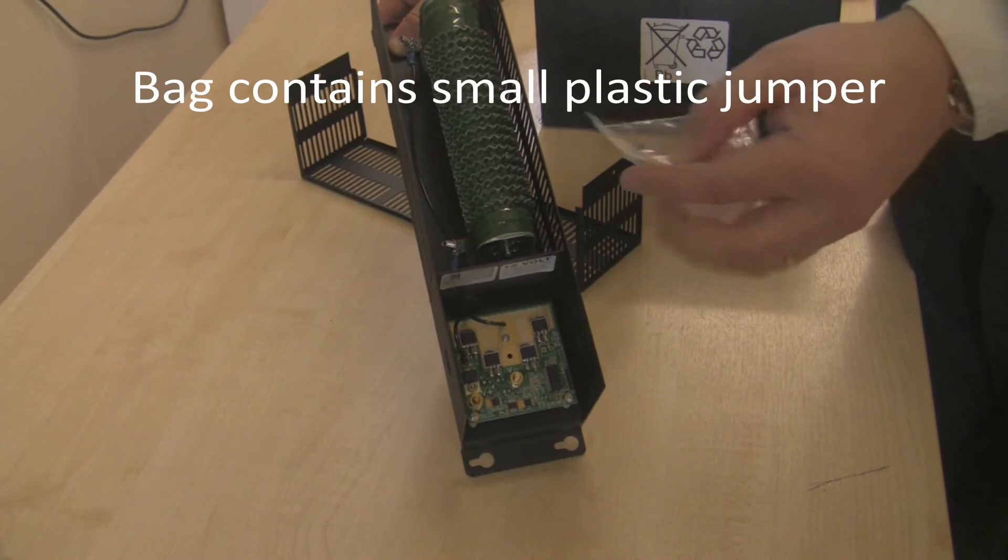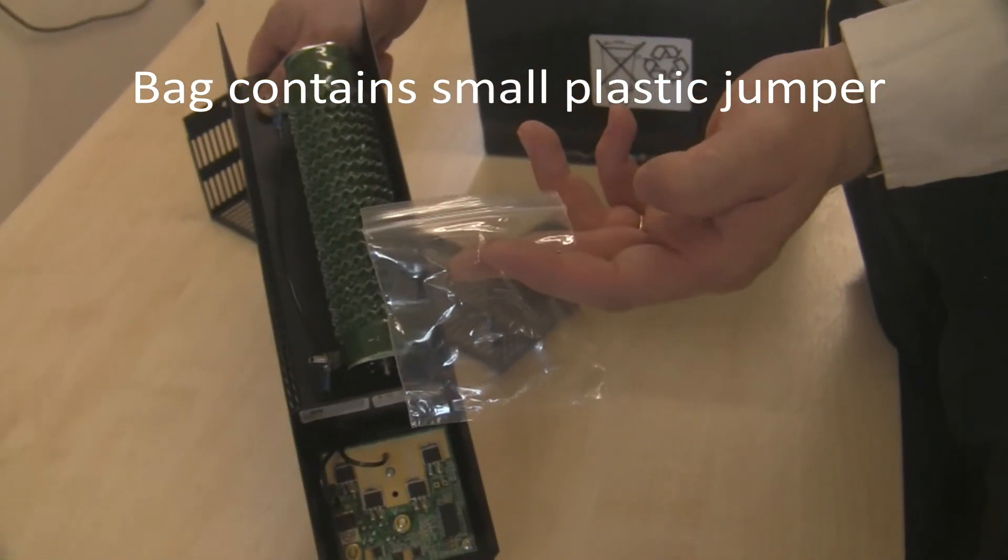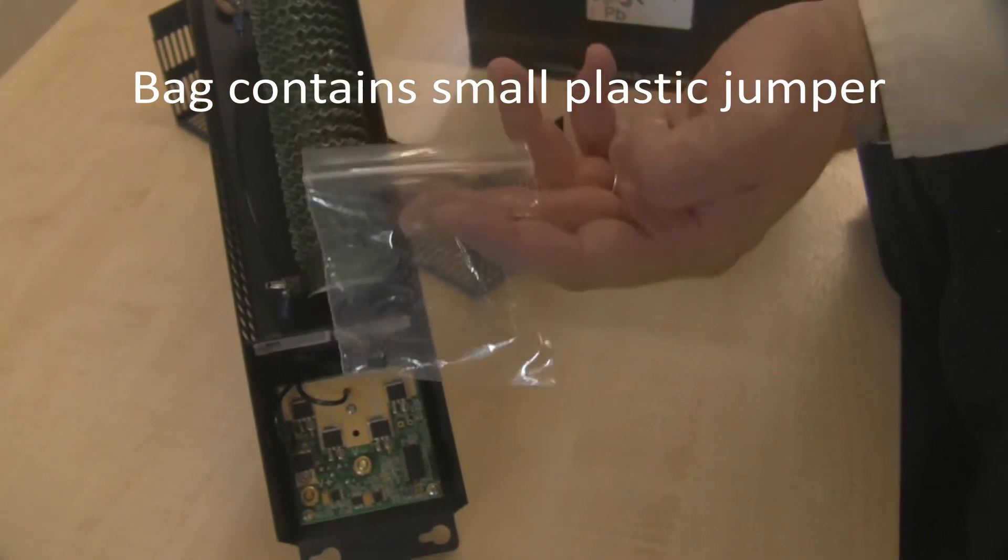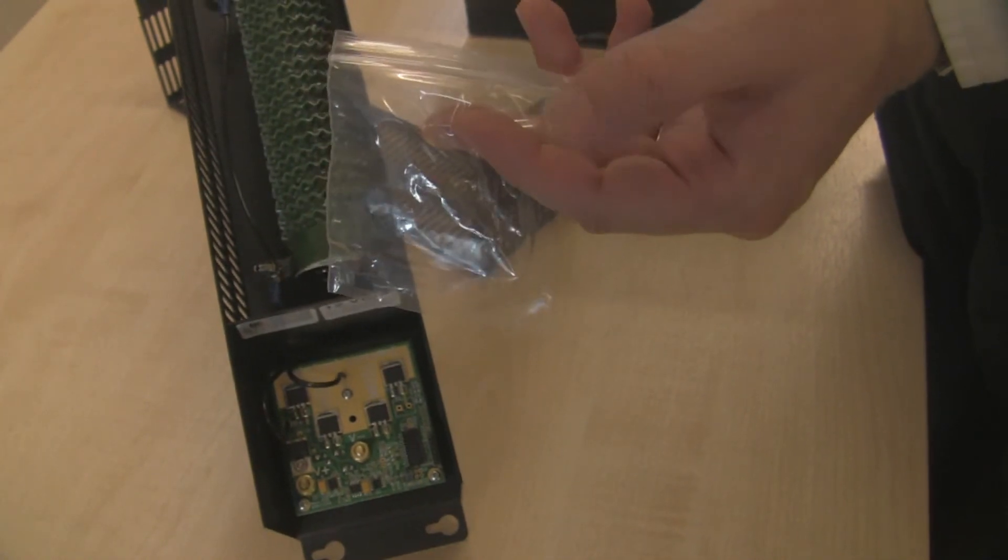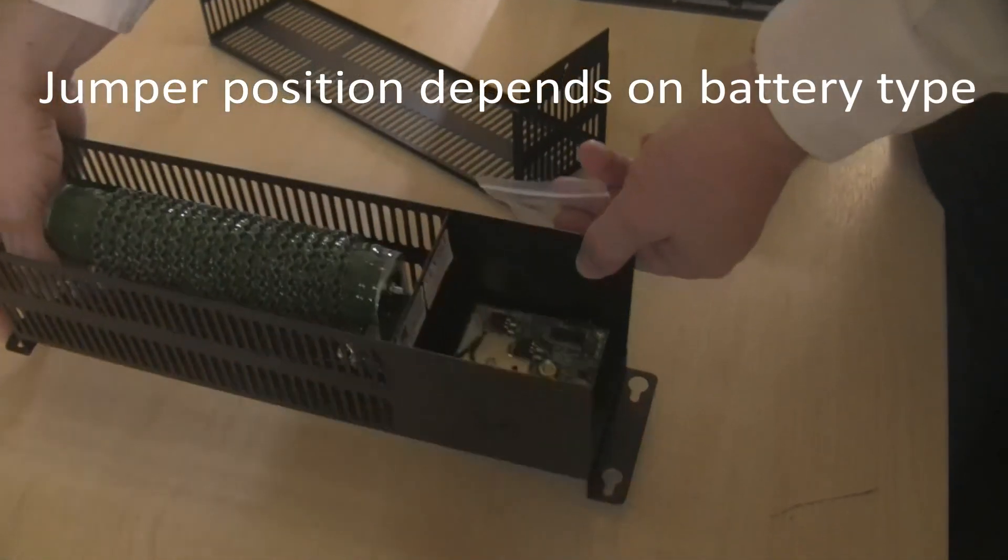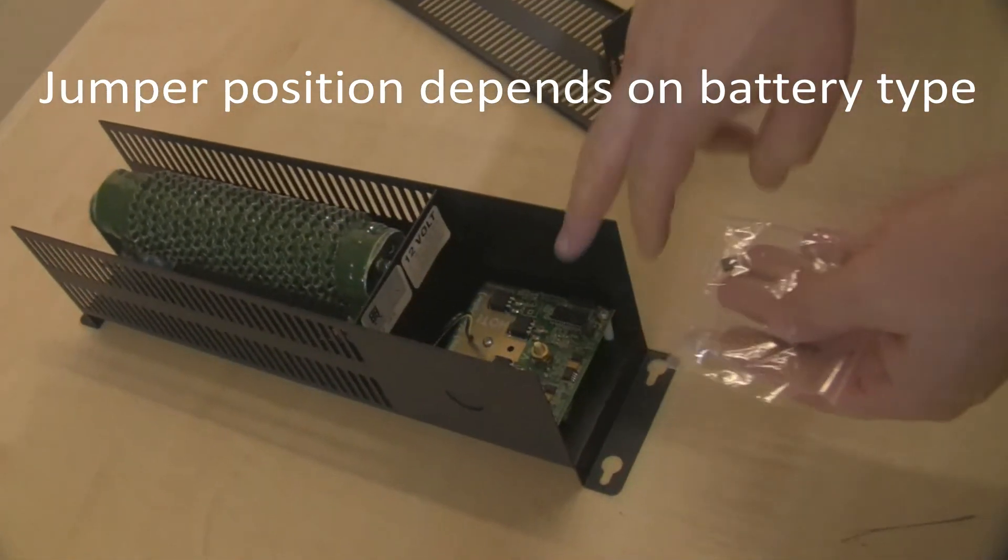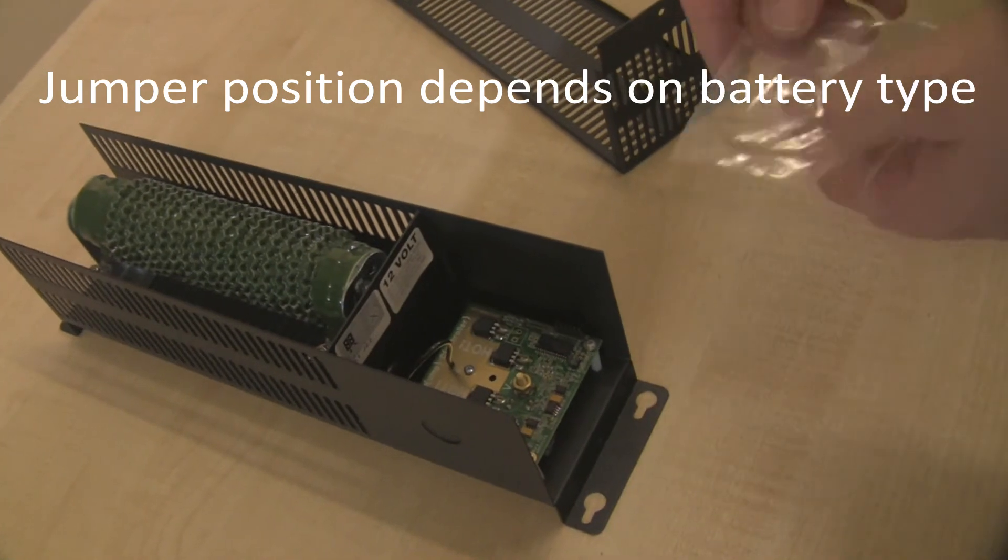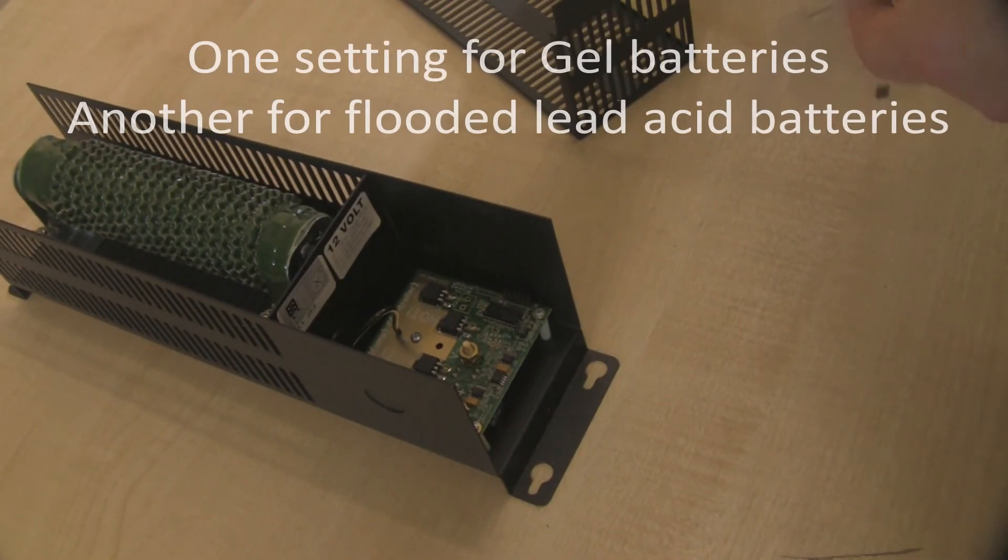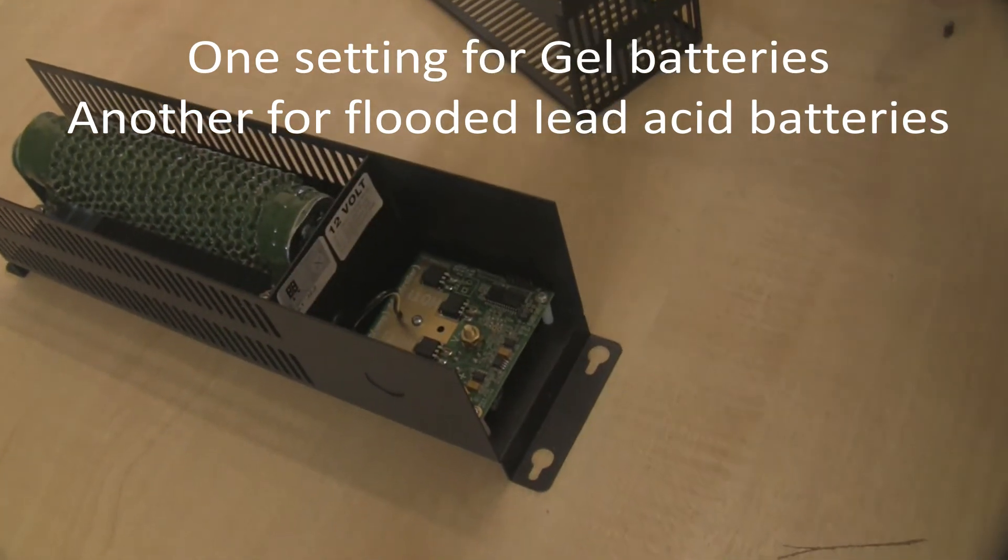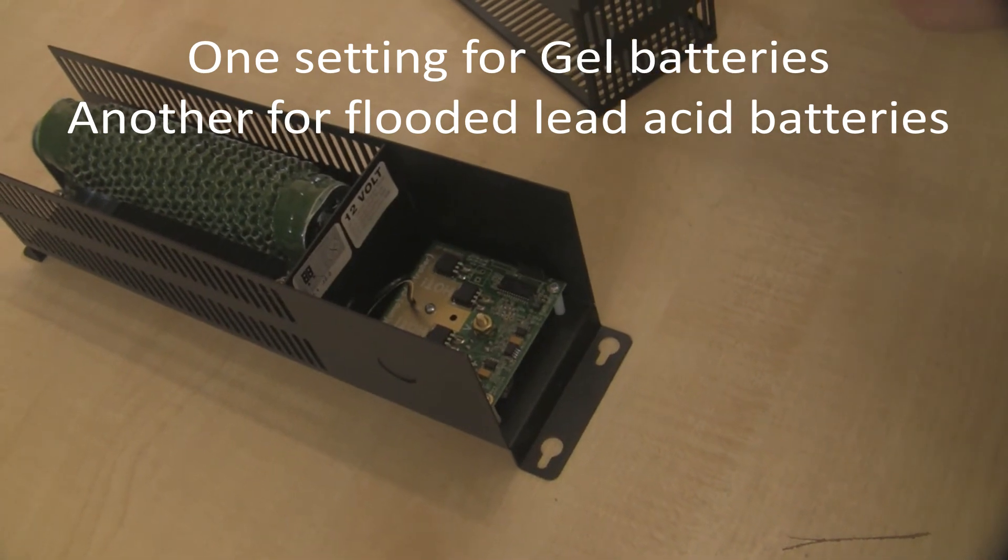Also supplied is a small plastic bag with a small plastic jumper in there, and we're going to use that in a moment to configure the charge controller. At this point we do need to refer to the user manual because we need to see what type of battery system we're charging and which jumper position we need to put on the circuit board. Now as this is a basic charge controller, it only has two settings: one is a generic set of voltage regulation points for gel batteries, and the other setting is for flooded lead acid batteries.